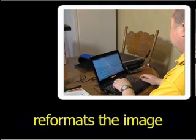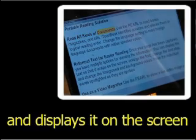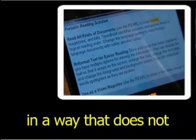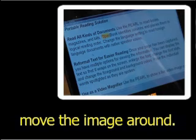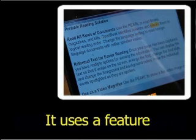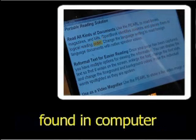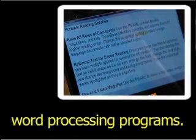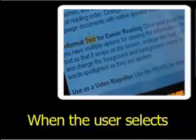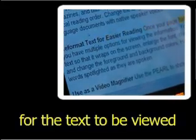The third viewing option reformats the image and displays it on the screen in a way that does not require the user to move the image around. It uses a feature similar to word wrap found in computer word processing programs. When the user selects the magnification level for the text to be viewed,